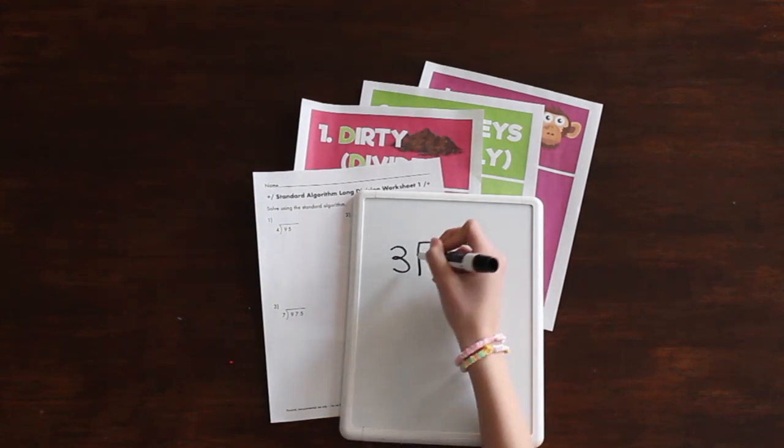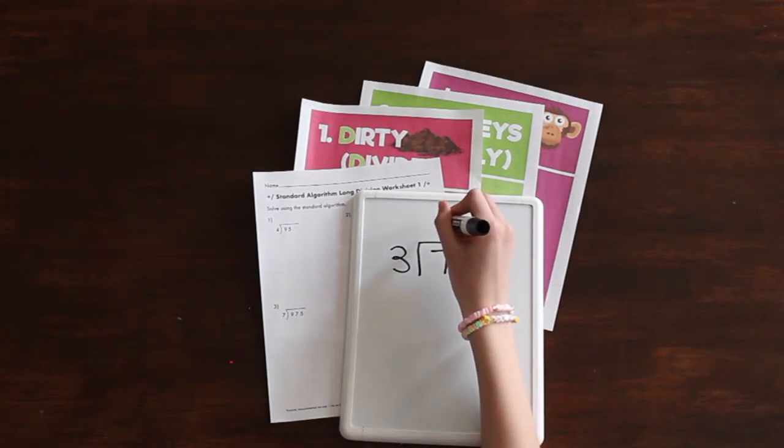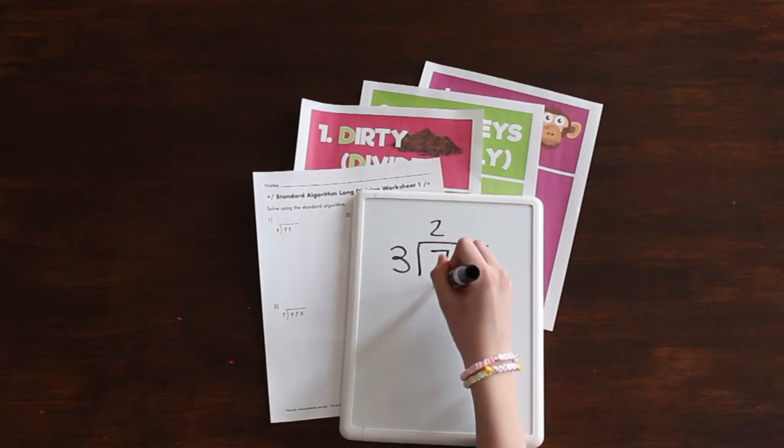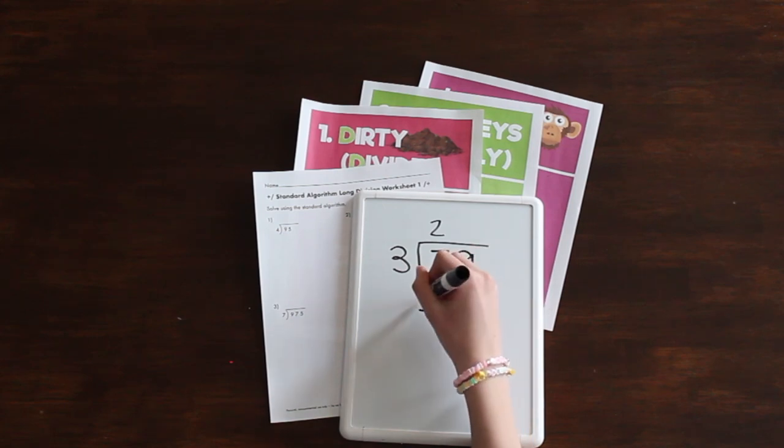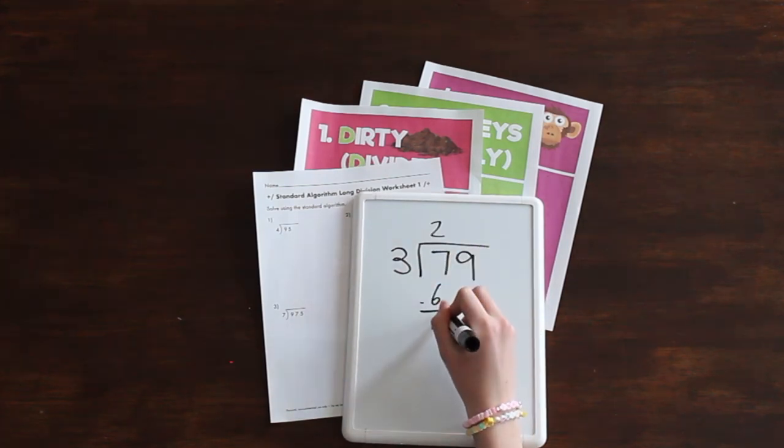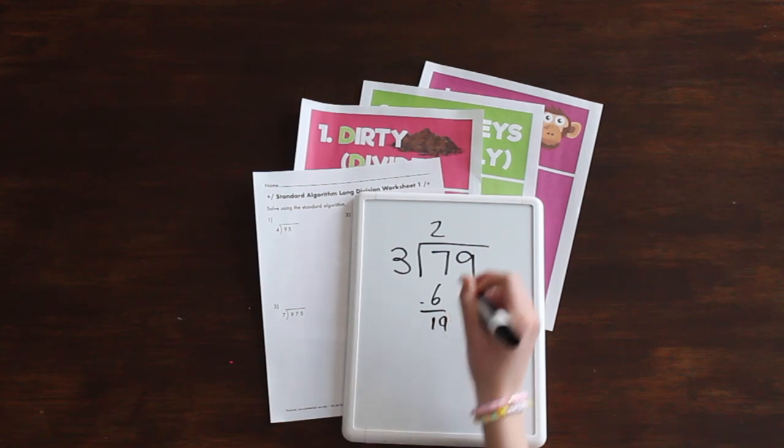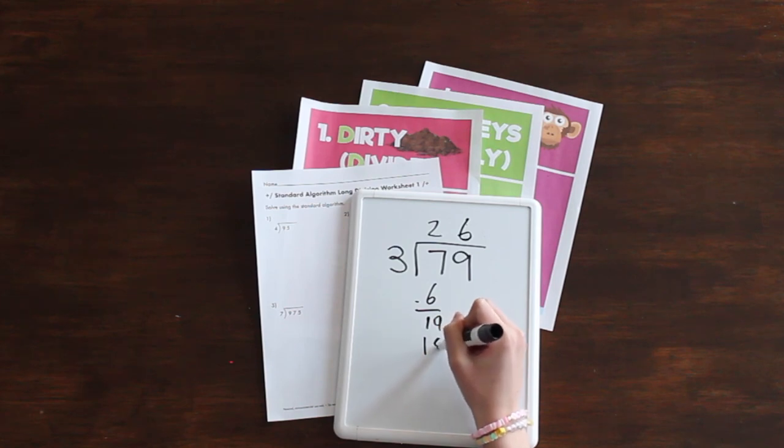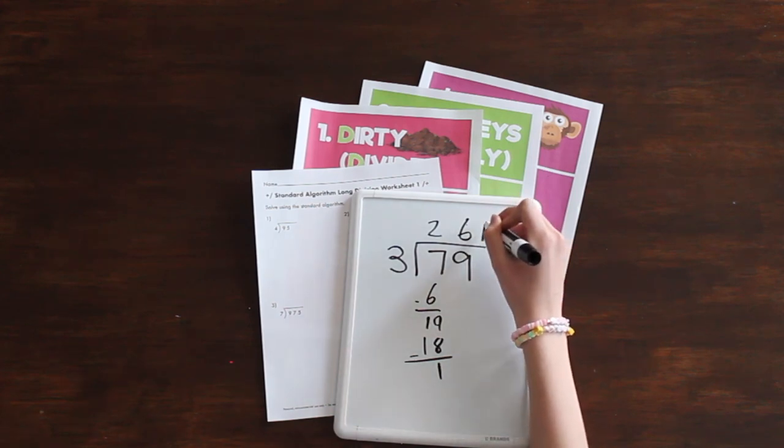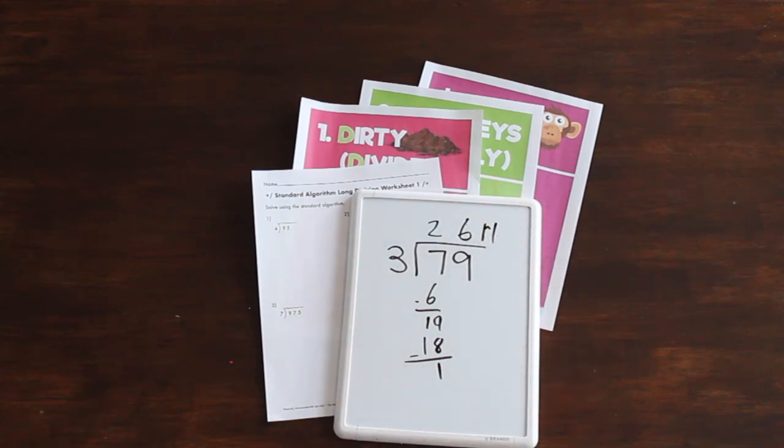Next, multiply, 2 times 3 equals 6. Write 6 at the bottom. Then subtract 6 from 7 to get 1. Last, bring down the next number, which is 9, to make 19. Now start again by dividing 19 by 3 to get 6. Multiply, 3 times 6 equals 8. Subtract, 19 minus 18 equals 1. Because there are no numbers left to bring down. This is our remainder.